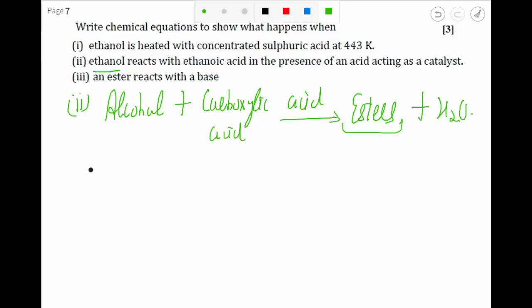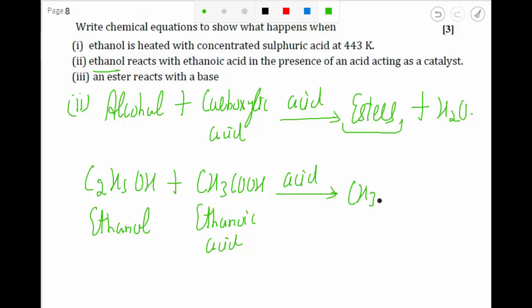If I try to write the reaction, it will be C2H5OH plus CH3COOH. This is ethanol, this is ethanoic acid. In the presence of an acid, it will be CH3COO first - the part from the acid, then the part from the alcohol, that is C2H5.